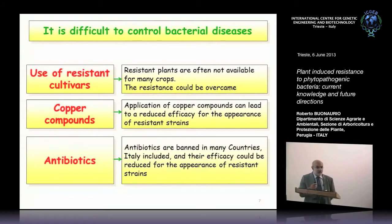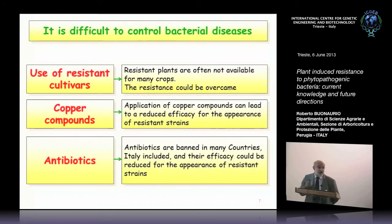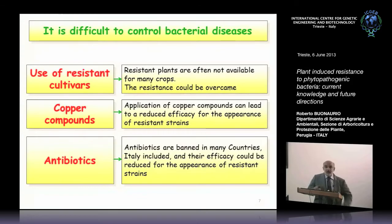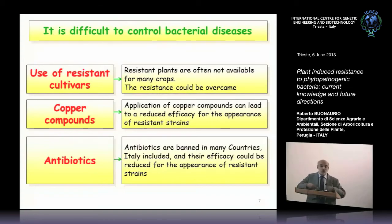The problem is that it is difficult to control bacterial diseases. The best, most environmentally friendly strategy is the use of resistant cultivars. However, resistant plants are often not available for many crops, and resistance can be overcome. In Pianura Padana, we observed the appearance of new races of Pseudomonas syringae pv. tomato — the agent of bacterial speck disease — due to large-scale cultivation of a resistance cultivar containing the resistant gene PTO. The bacterium was able to overcome this resistance.